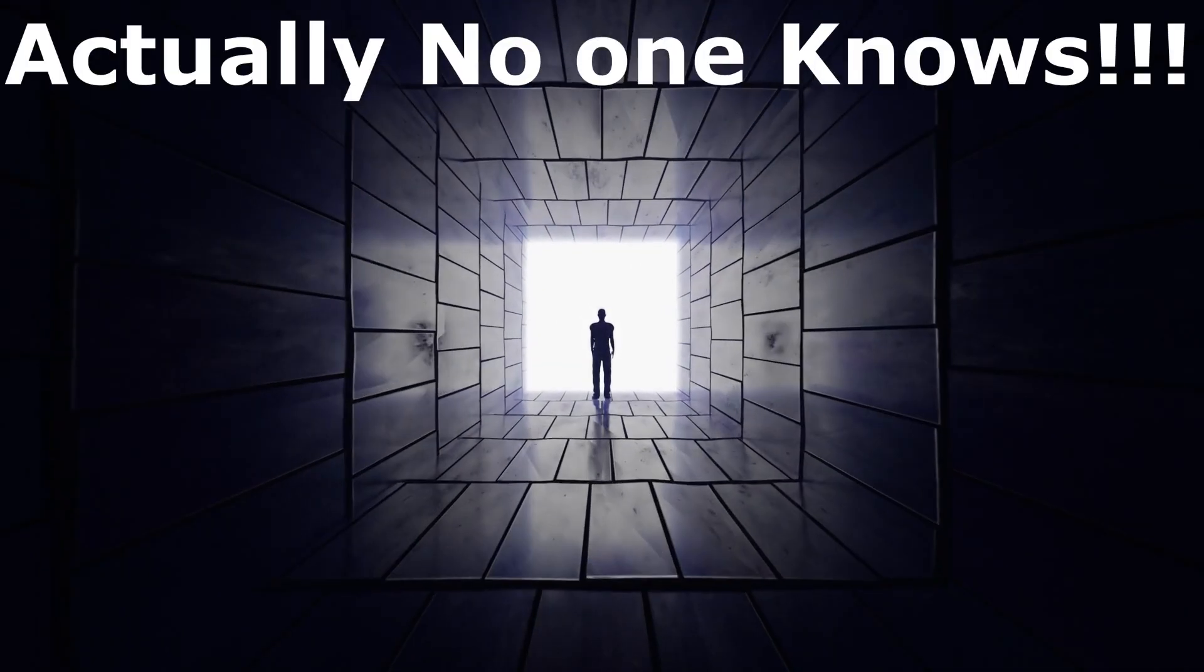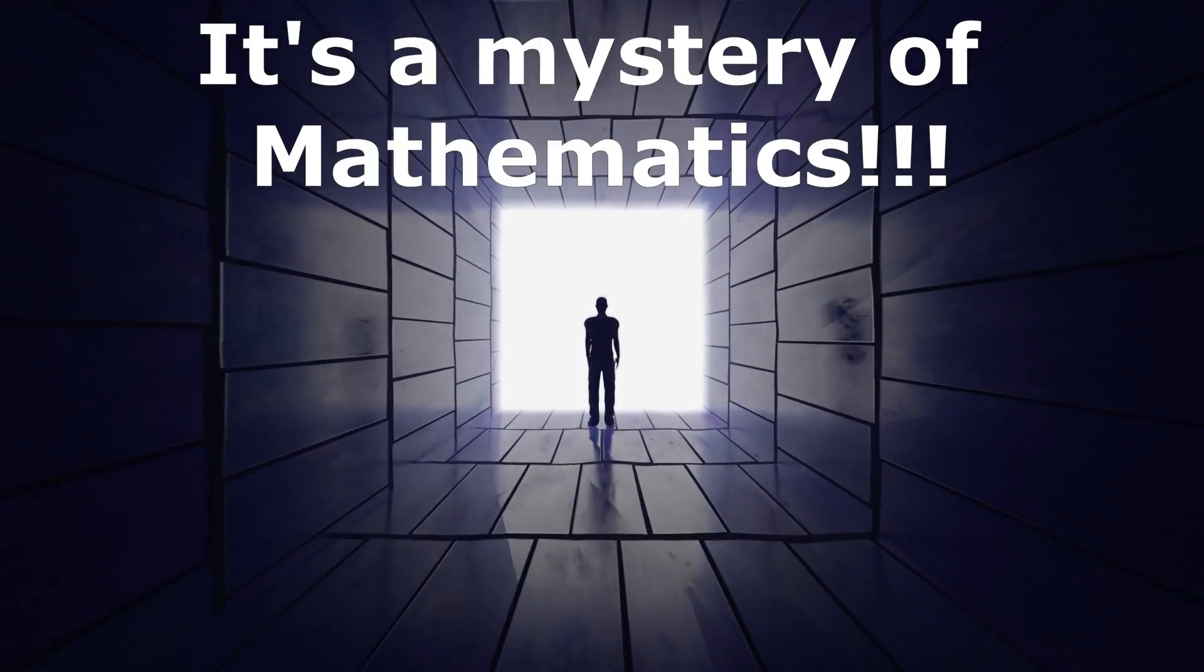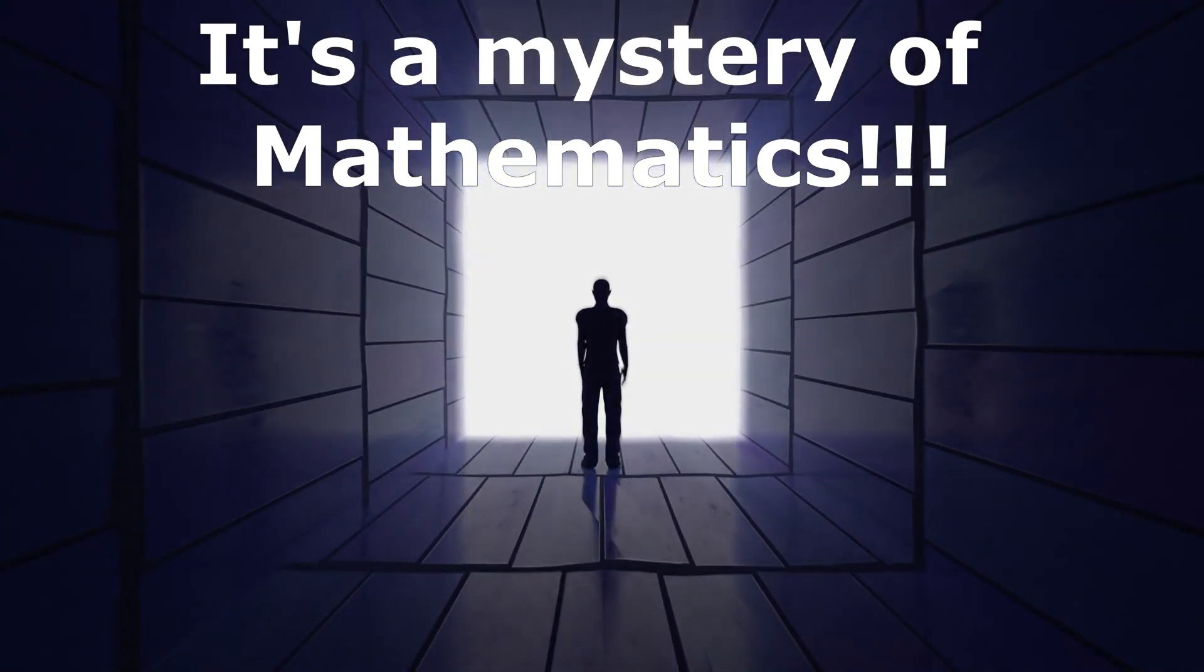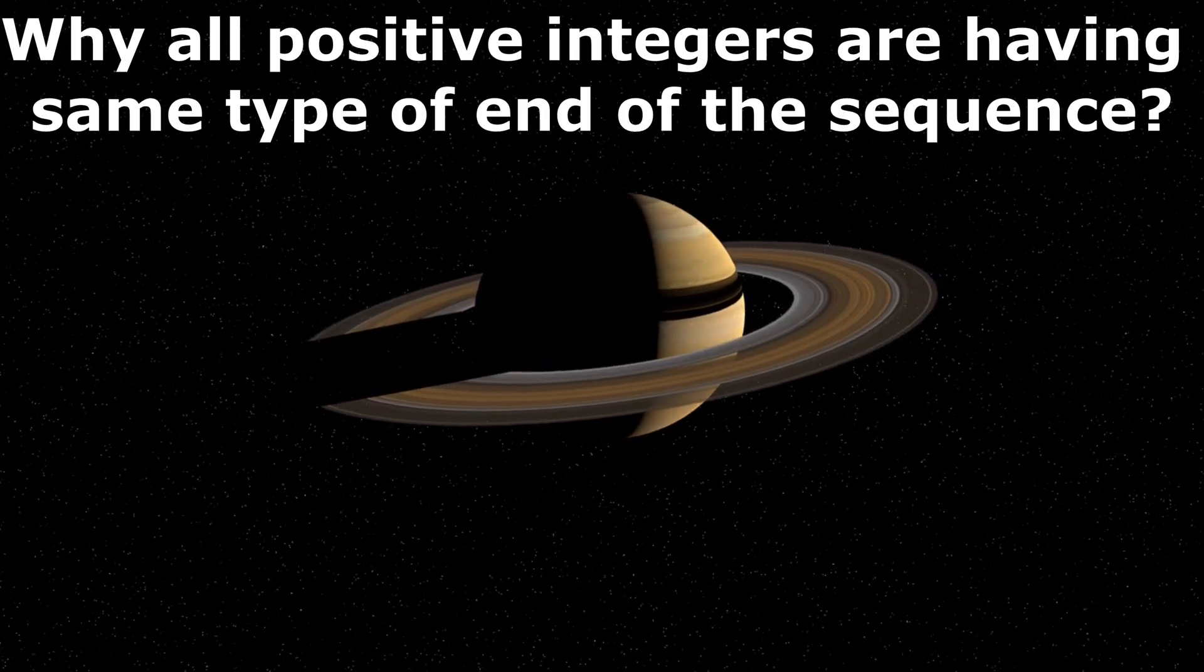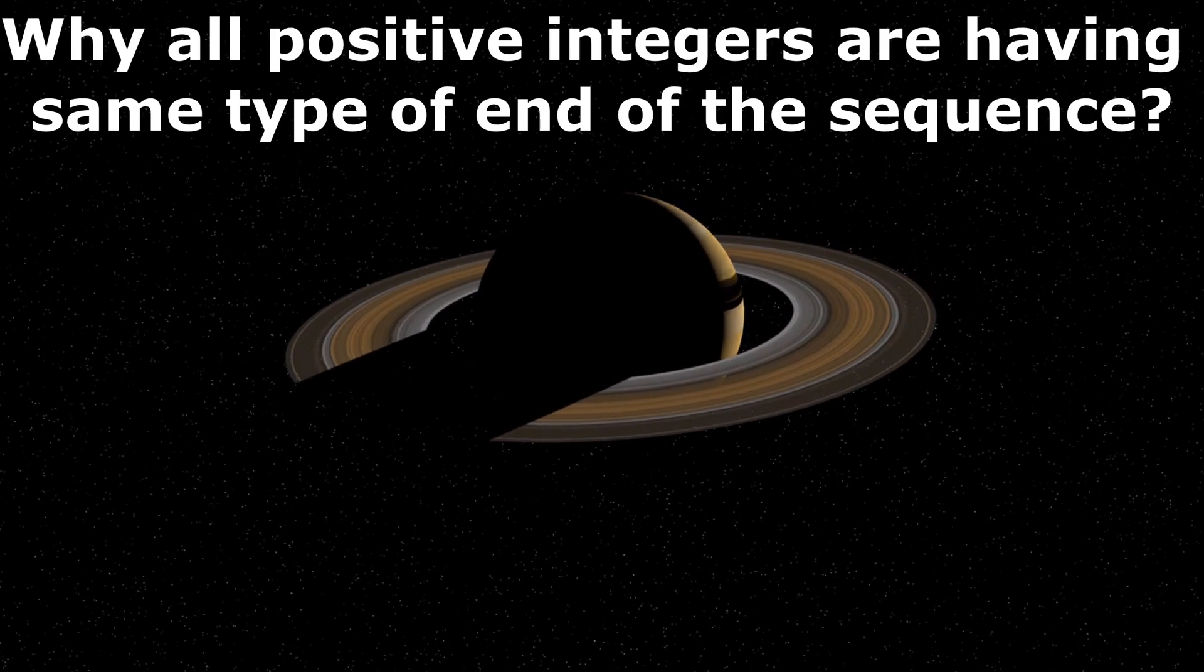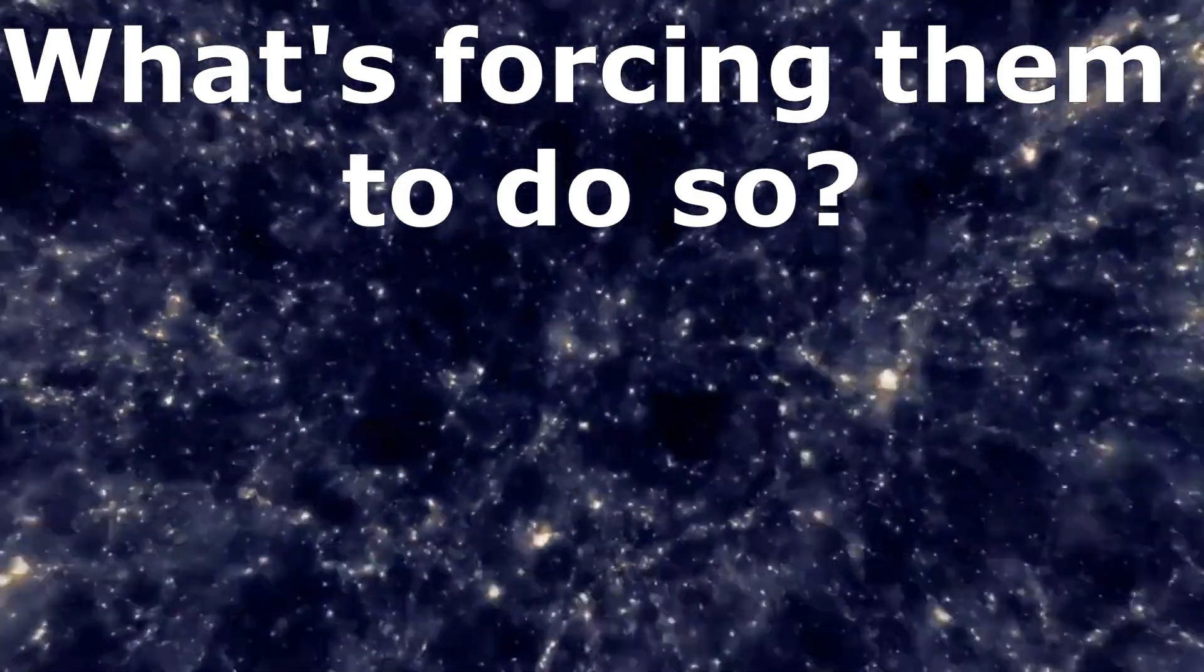Do you know why does it happen? Actually, no one knows. It's actually a mystery of mathematics. Why all positive integers are having same type of end of the sequence. What's forcing them to do so?